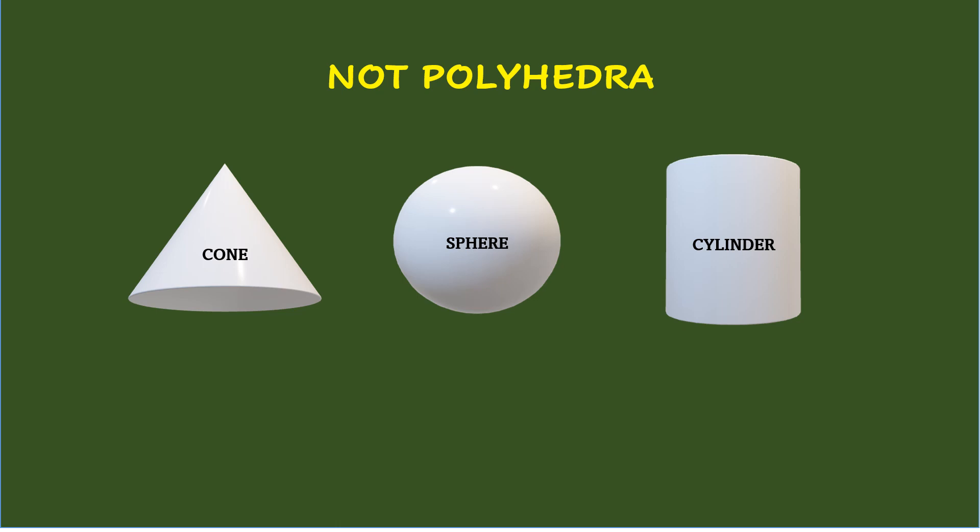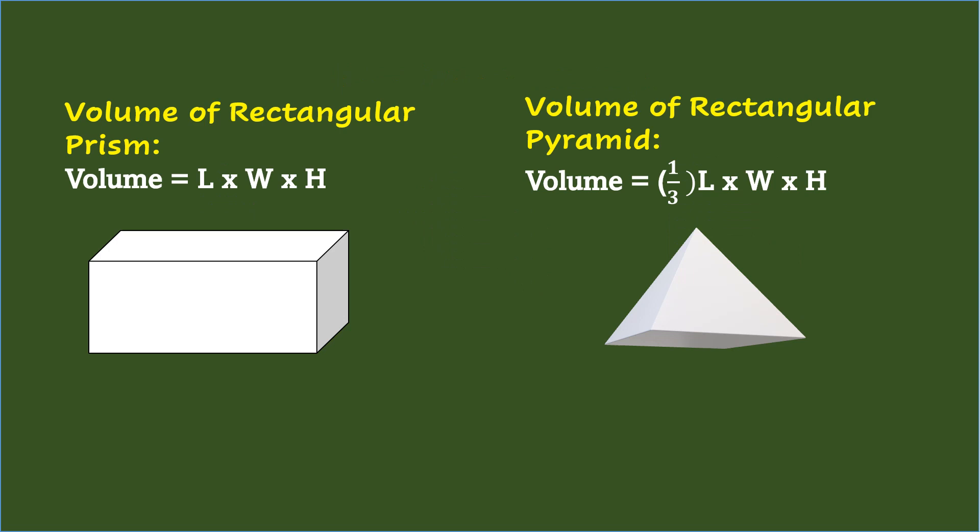On the other hand, there are solids which are opposite of this. Thus, they are considered as not polyhedra. Examples are Cone, Sphere, and Cylinder. When talking about the relationship between the volumes of both polyhedra, not polyhedra, and combination of polyhedra and not polyhedra, it is much better to see first each of their volumes.